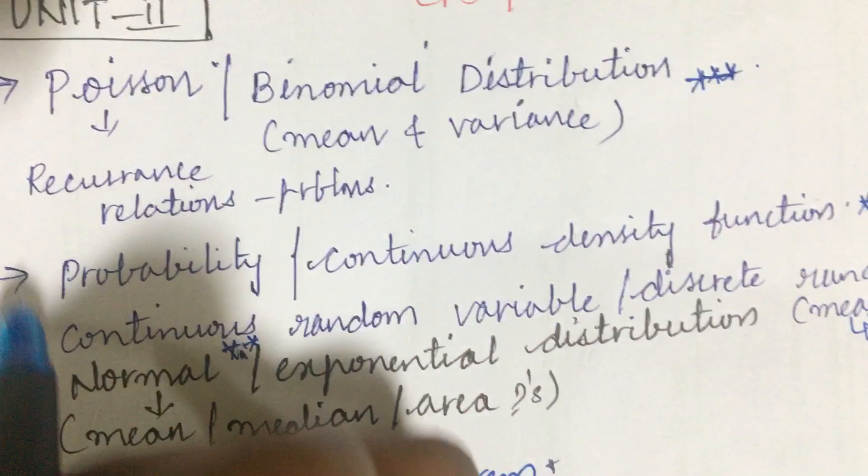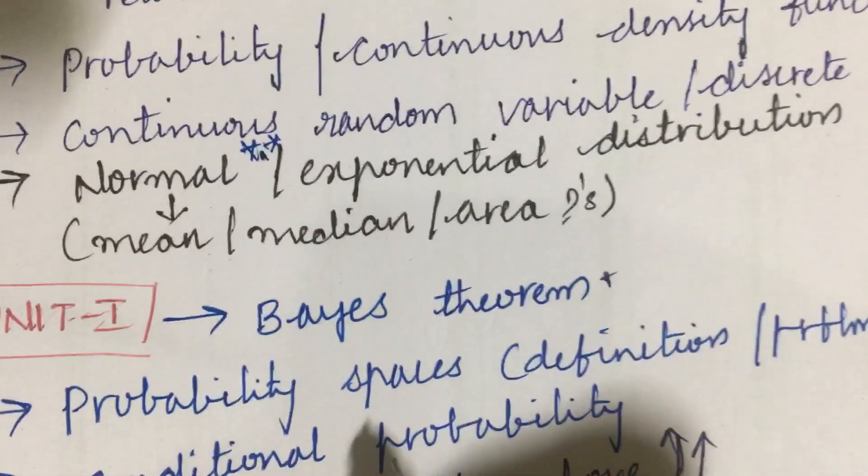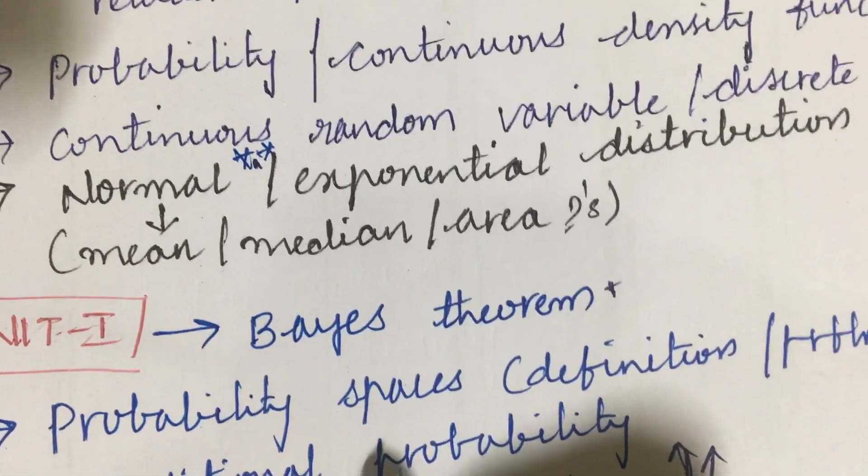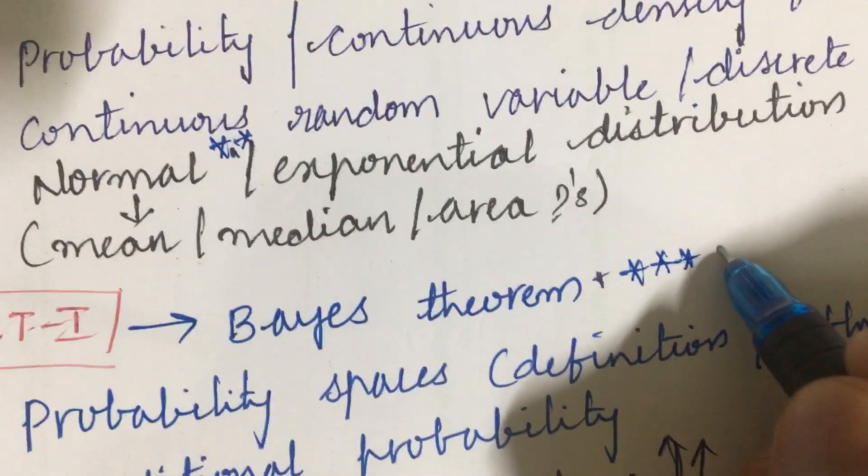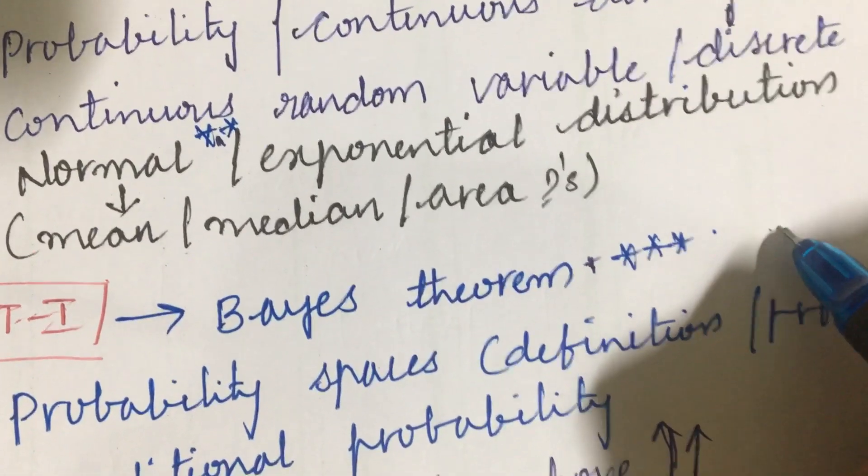Please do work out all the concepts related to this. Later I have come with the first question, I mean unit one. The gunshot question is all about the Bayes theorem and the problems related to it.